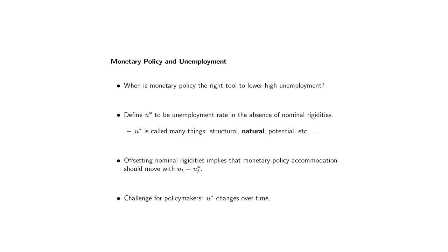So what I've told you so far is that nominal rigidities can create a role for monetary policy, and that if demand is low because of nominal rigidities, monetary policy should be accommodative. What does this say about labor markets — in particular about unemployment? When is monetary policy the right tool for lowering high unemployment? The way to think about this is to imagine an artificial world without any nominal rigidities at all, and think about what the unemployment rate would be in that world. I'm going to use the term U* — the natural rate of unemployment — a lot.